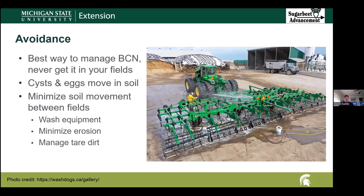Also, soil erosion can be one method for eggs and cysts to move, both with windblown erosion as well as water erosion. Managing tear dirt is an important step here, because as you know, when you take your beets to the factory or the piling grounds, you receive your tear dirt back — but sometimes you can receive just a little bit from your neighbor too. If they happen to have sugar beet cyst nematode, you can get those eggs and cysts back and dump them in your field. So you want to try to manage that by either taking tear dirt back to fields that aren't going to be planted to sugar beets, or dumping your tear dirt in fields that already have sugar beet cyst nematode.